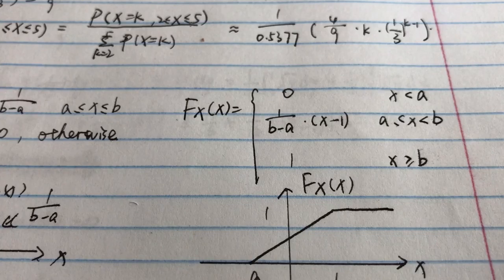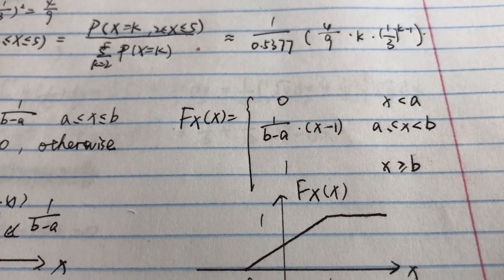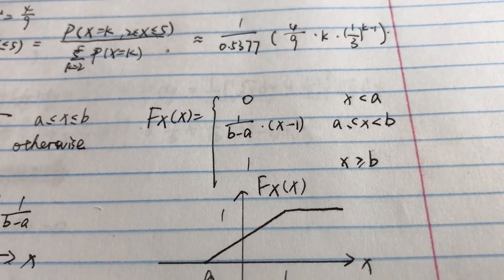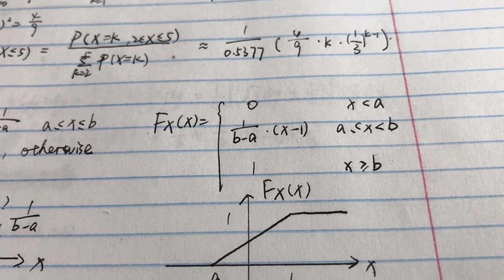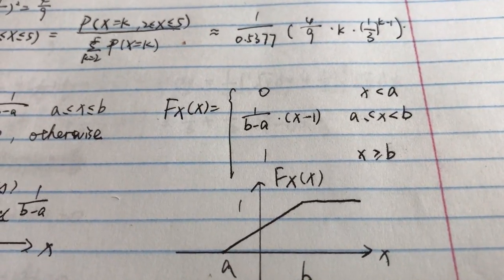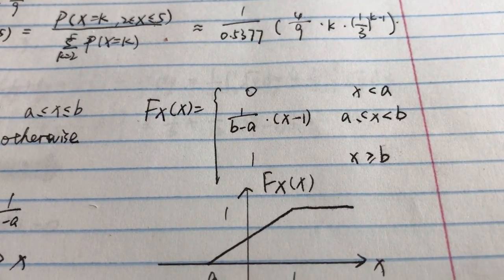1 divided by b minus a multiplied by x minus a when x is more than or equal to a and also less than b, and 1 when x is more than b.